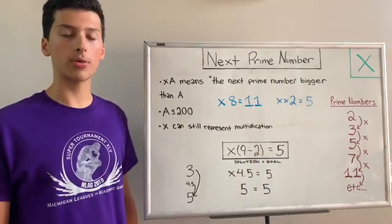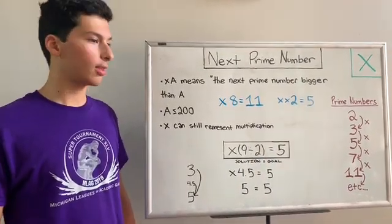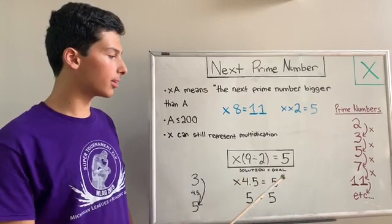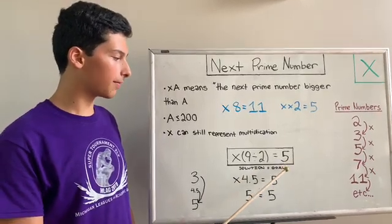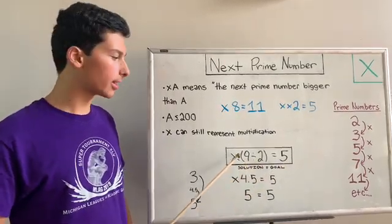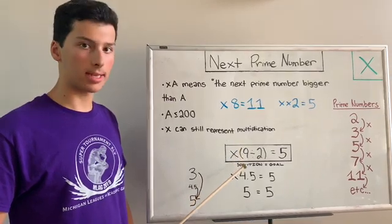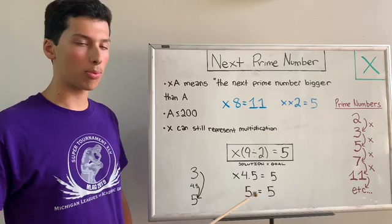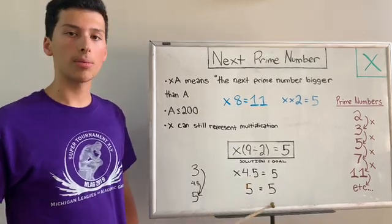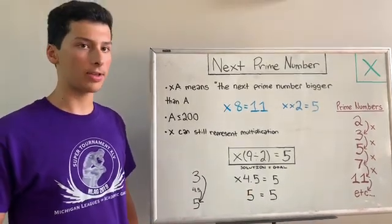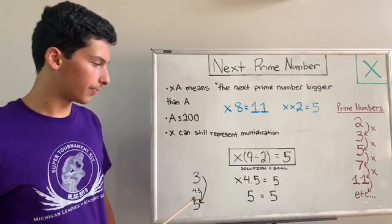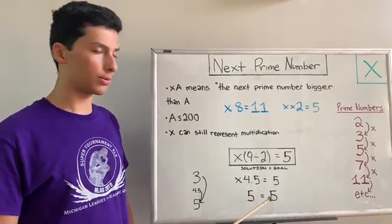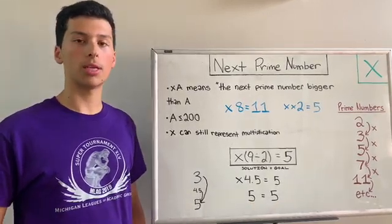A has to be less than or equal to 200. Now, if you look at this example here, the goal is 5. The solution is the next prime with parentheses 9 divided by 2. 9 divided by 2 equals the 4.5. The next prime number that is above 4.5 is 5, as you can see here. So 5 equals 5, and this solution would equal the goal.